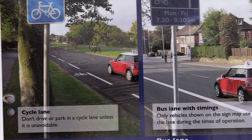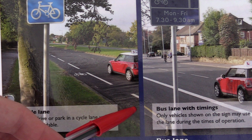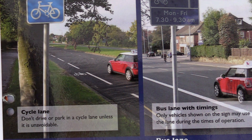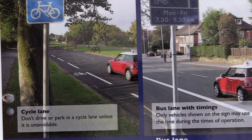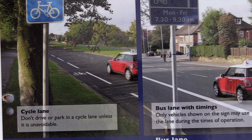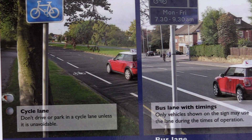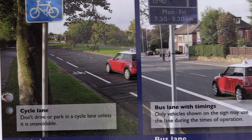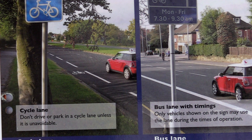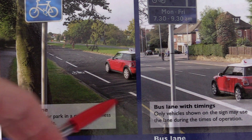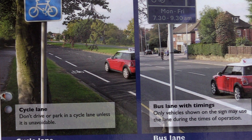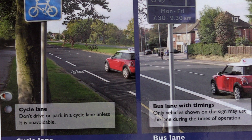Cycle lanes: a cycle lane marked with a broken white line means you must not drive or park in it unless unavoidable — for example, avoiding an obstruction or taking a left turn. If the cycle lane has a continuous white line, you must not park or drive on it unless it's a genuine emergency.